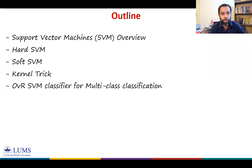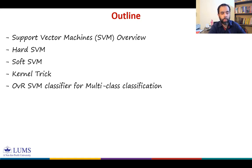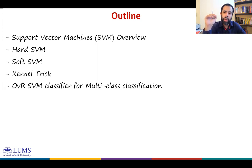The outline for this topic: we will start with an overview of SVM and study what we mean by maximum margin classifier — SVM is one type of maximum margin classifier. After the overview we will cover hard SVM, followed by soft SVM that allows us to handle noise in the data. Then we will discuss the kernel trick used in SVM to handle classes that are not linearly separable, and finally conclude with one-versus-the-rest SVM for multi-class classification.